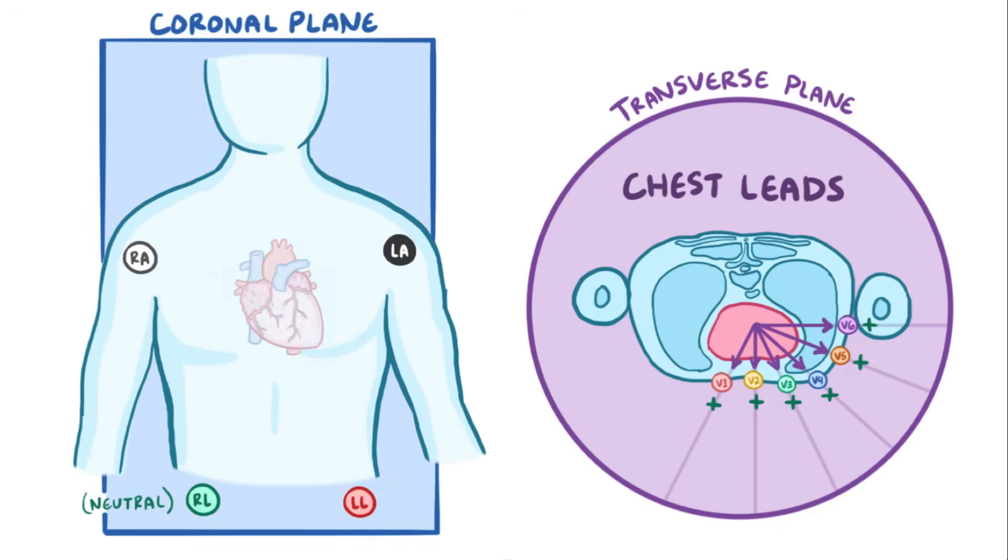Meanwhile, in the coronal plane, the non-neutral leads are called augmented vector right, or AVR, on the right arm, and augmented vector left, or AVL, on the left arm, both of which are represented as vectors that are 30 degrees up from the horizontal line. Finally, there's the augmented vector foot, or AVF, on the left foot which anatomically isn't straight down, but it's close enough that it ends up representing the vector facing straight down on the diagram. Just like the precordial electrodes, AVR, AVL, and AVF each detect any positive deflection coming toward them.